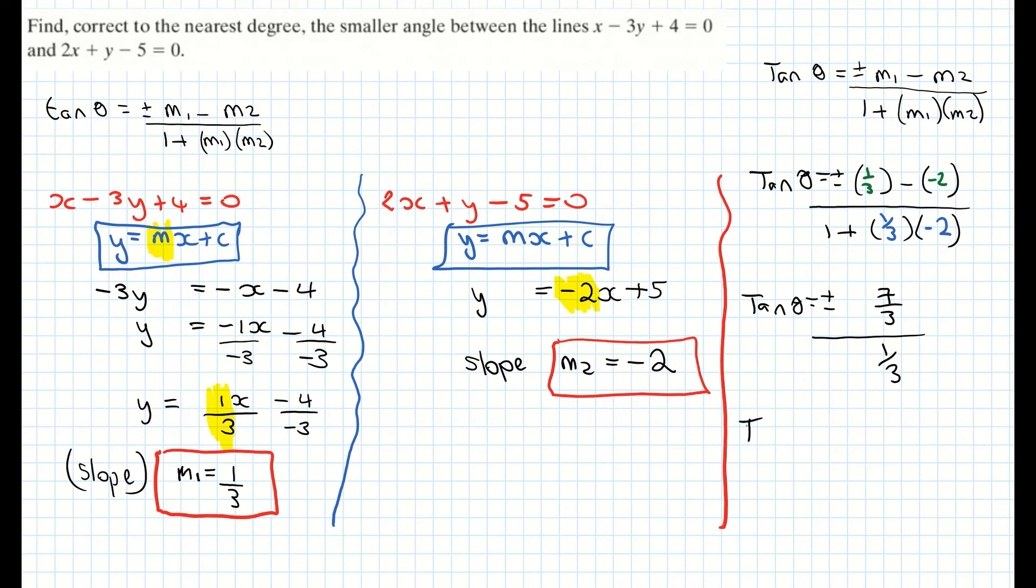I now divide my fraction so tan theta. I'm going to ignore the plus or minus here now because they're both positives and I know I have to take the positive solution for my answer. So 7 over 3 divided by 1 over 3 when I flip my fractions and multiply that's giving me 7. So tan theta is equal to 7.